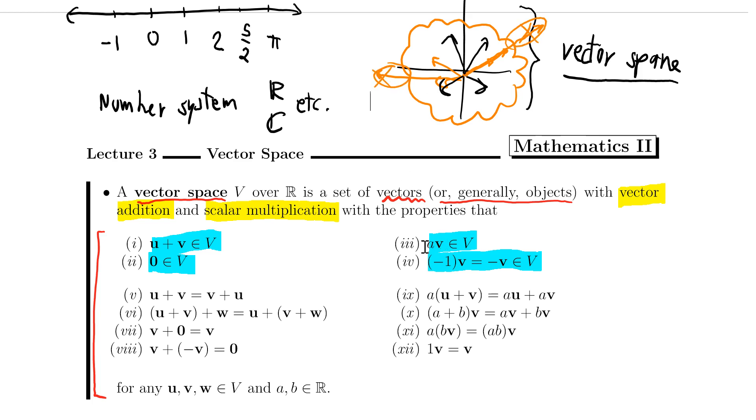In particular, if my a here is negative one, so that means negative one times v is negative v. I want that to be also a vector. Let me actually mention the name real quick. This is called closed under addition.